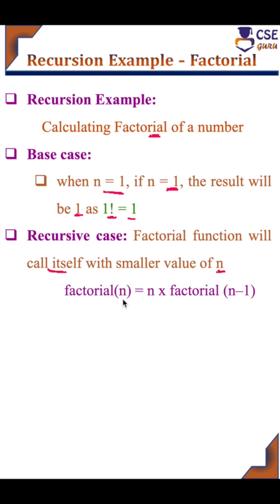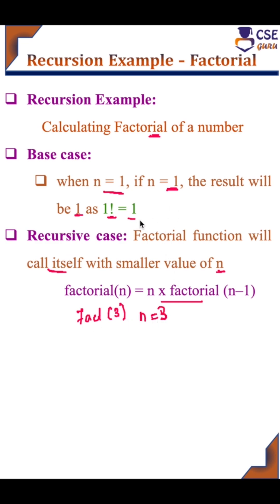That is, factorial of n is equal to n into factorial of n minus 1. For example, if I want to find factorial of 3, here n value is 3. If n value is 1, it has to return 1 as the result.